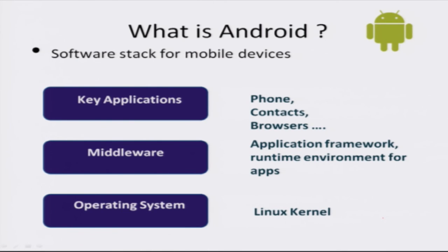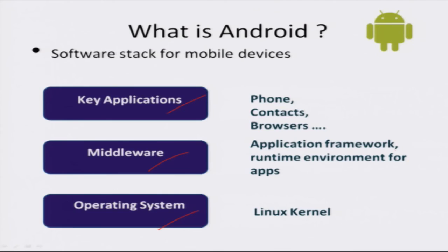What is Android? It is a software stack and its main components are the operating system, middleware, and key applications. The operating system is the Linux kernel, which supports hardware libraries that allow us to interface with and communicate with hardware. In the middleware we have the application framework which allows us to develop applications, and a runtime environment which allows us to execute those applications. On top of these we have applications like phone, contacts, browsers, and many more.